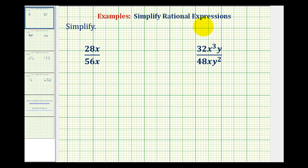Simplifying rational expressions is just like simplifying fractions. We want to simplify out all of the common factors between the numerator and denominator. There are a couple of ways of showing this. If we have a hard time identifying the common factors, it's best to write everything out in prime factored form.